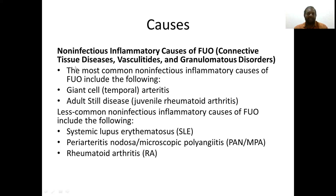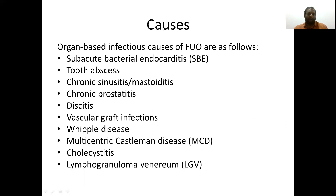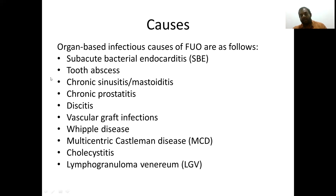Non-infectious causes include connective tissue disorders, vascular disease, and granulomatous disorders — such as SLE, polyarteritis nodosa, rheumatoid arthritis, and others. We have to think about common causes first — infectious, then non-infectious. PUO workup should exclude subacute bacterial endocarditis, dental abscesses, chronic sinusitis, mastoiditis, chronic prostatitis, discitis, vascular graft infections, Whipple's disease, multicentric Castleman disease, polymyositis, and lymphoproliferative disorders.